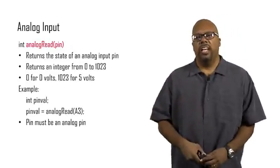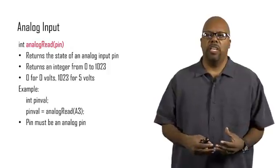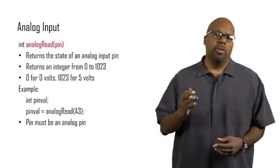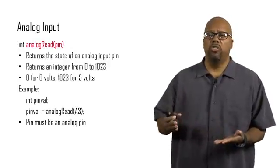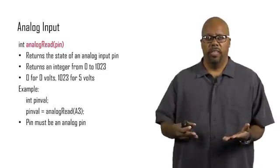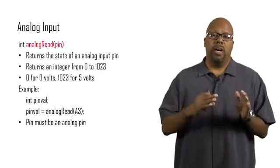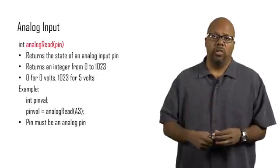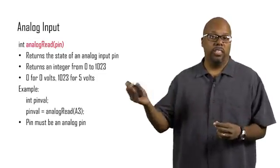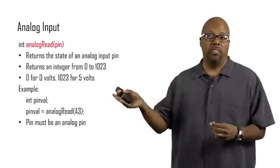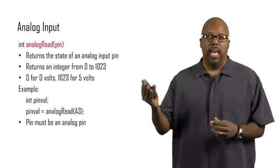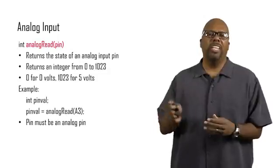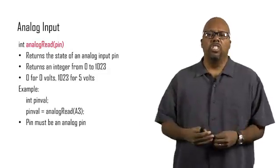analogRead returns the state of the input pin, of the analog input pin, but it returns an integer from 0 to 1023. 0 is the bottom of the range, so if you've got 0 volts on this pin, it's going to return you a 0. And the top of the range is 5 volts, so if it sees 5 volts, then it's going to return you a 1023. And it'll return you numbers in between according to the voltage.